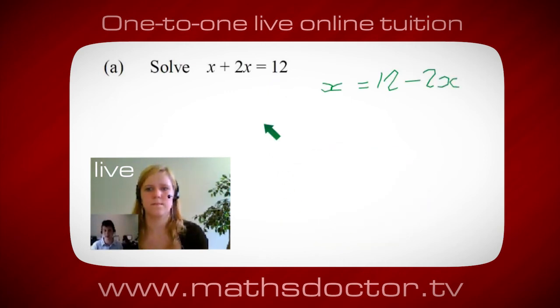So a lot of the time we want to get x by itself but what we want to do first is get all of these x's together so can you see anything we can do with this? Get all these together in one place. Oh okay, it's 3x isn't it?